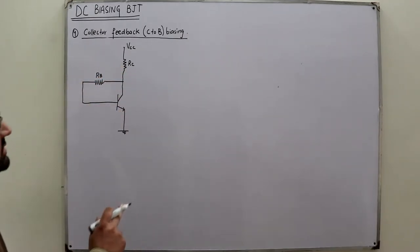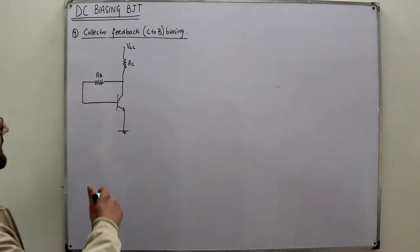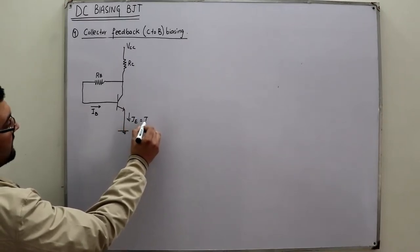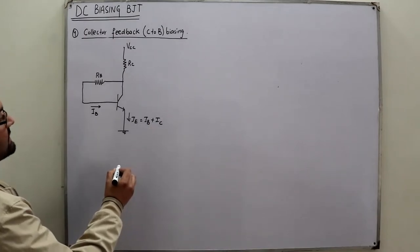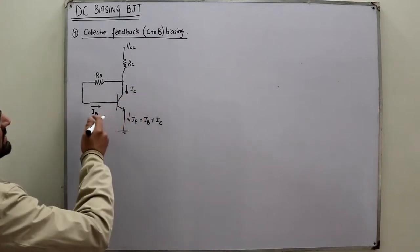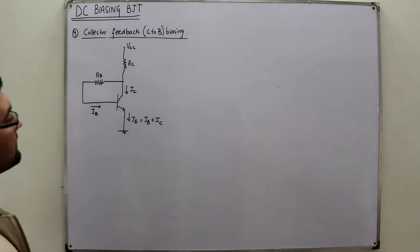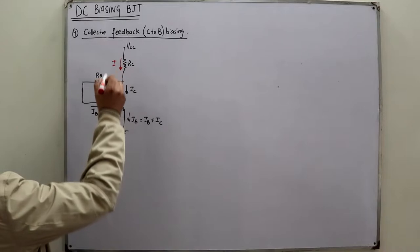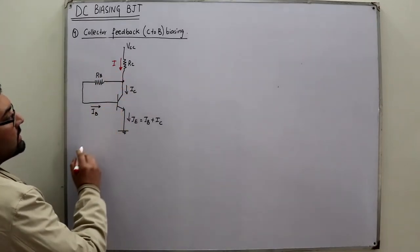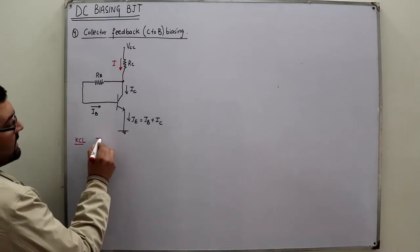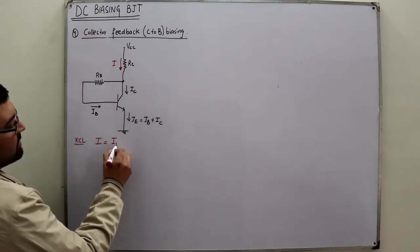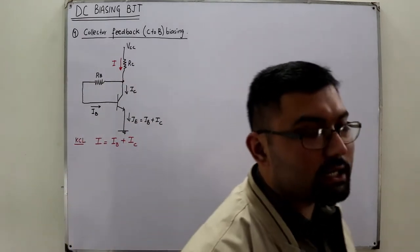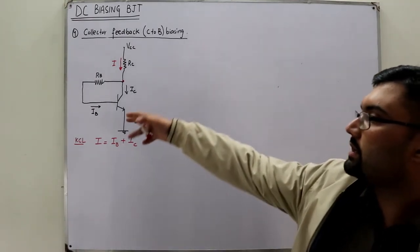Considering the NPN transistor: you have base current IB, and IE = IB + IC. The IC current flows through the collector. The current through resistance RC is not IC — it is a current I. Applying KCL to the node, the current I through RC is the sum of IB and IC. The collector current is not the current through RC; it is the current entering the collector terminal. So unlike previous configurations, the current is divided here.